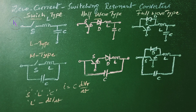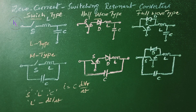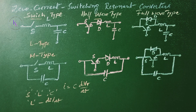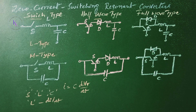Practical devices do not turn off at zero current due to their recovery times. As a result, an amount of energy will be trapped in the inductor L of the L type configuration and voltage transitions will appear across the switch. This favors the L type configuration over the M type configuration.